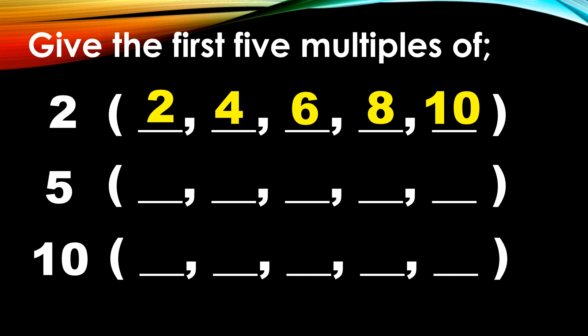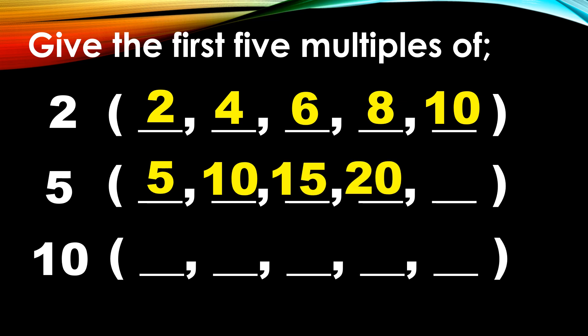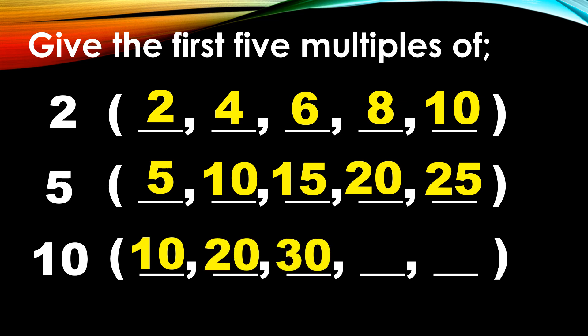Let us proceed to number 5. So we have 5, 10, 15, 20, and 25. What about 10? What are the first 5 multiples of 10? We have 10, 20, 30, 40, and 50. These are the first 5 multiples of 2, 5, and 10.